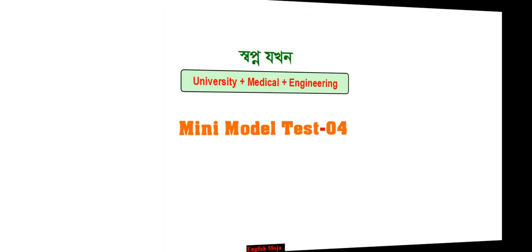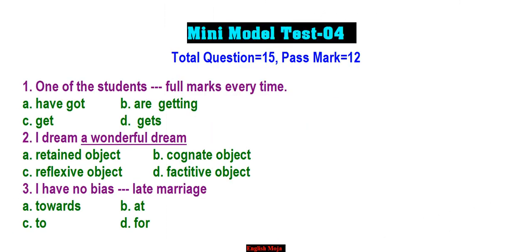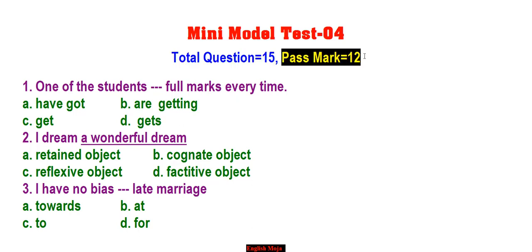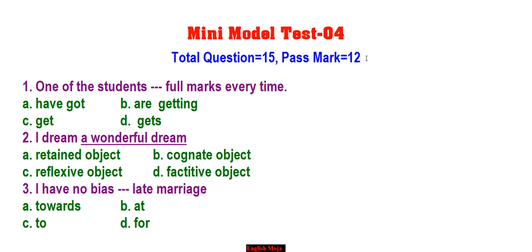Look at me. This is Minimodel Test 4. The total questions are 5 and 5 marks, definitely under 12. You don't have a serial number, and you don't have the number of answers to the best question. In the next 24 hours, you will know how to get the answer to this explanation.